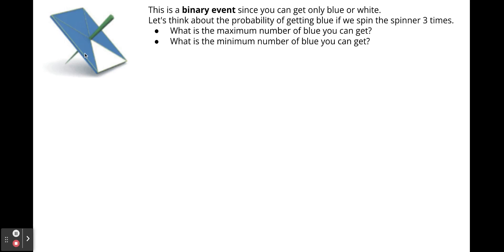Looking at this spinner, there are two options: white or blue. The probability of landing on white is one-fourth, and on blue is three-fourths. This is a binary event. If you spin the spinner three times and record the color, the maximum number of blues you could get is three, and the minimum is zero — you could get white every single time. So with three spins, the outcomes range from zero to three blues.